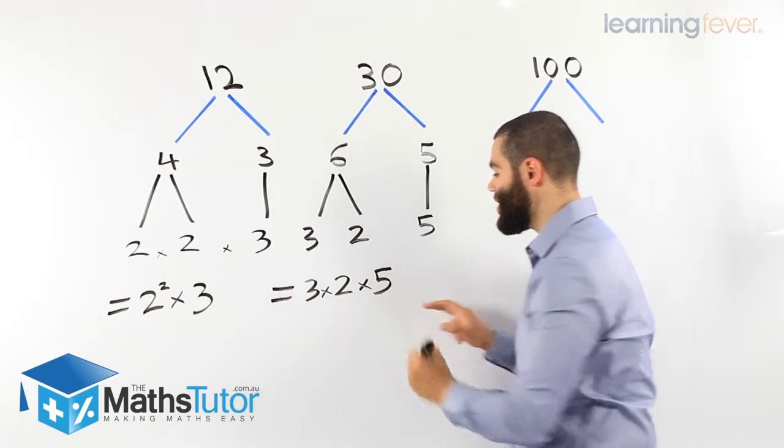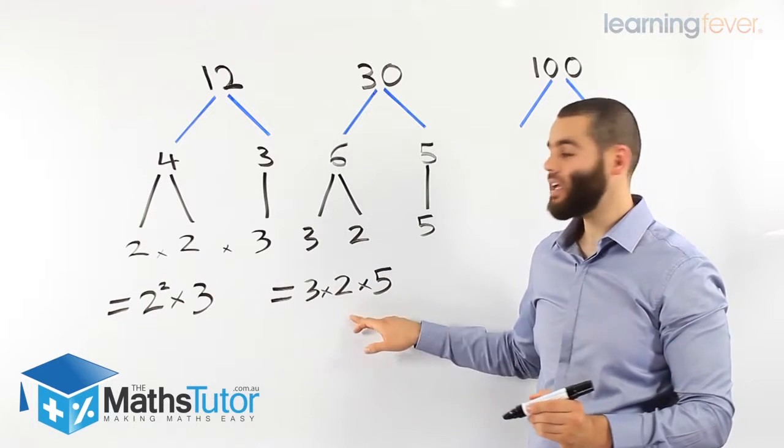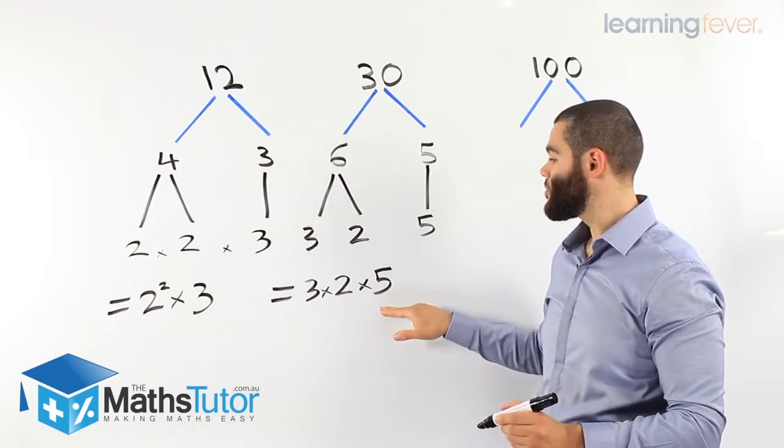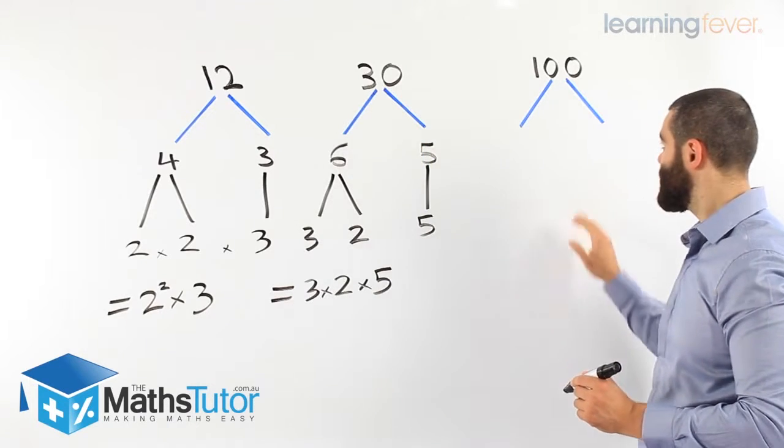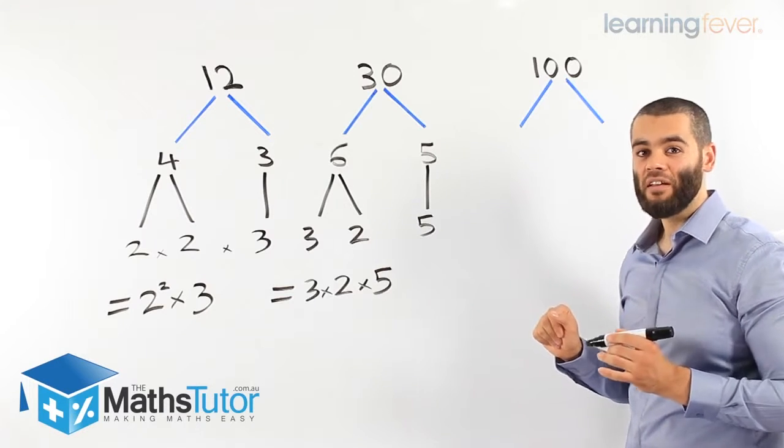3 times 2 times 5 are the prime numbers broken down, times each other, multiply each other to make 30. We'll do one more and you'll get a better understanding.